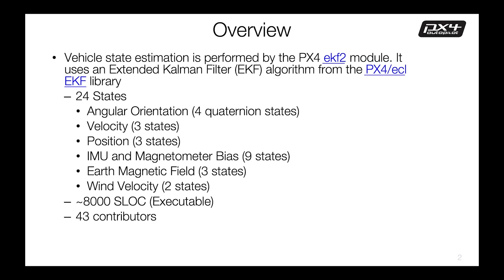The Estimation Library is a complex piece of code. It's flight critical. It uses inertial navigation theory, estimation theory, and it has a significant number of developers. The library goes back to some original extended Kalman filter work performed back in 2014 on the project, and it's been through several iterations since.